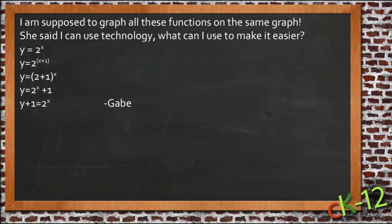Gabe said that he's supposed to graph all these functions on the same graph, but his teacher said that he can use technology and he wants to know what he should use to make it easier. He's got five different exponential functions he's supposed to graph: y equals 2 to the x, y equals 2 to the power of x plus 1, y equals the quantity 2 plus 1 to the x, y equals 2 to the x plus 1, and y plus 1 equals 2 to the x.